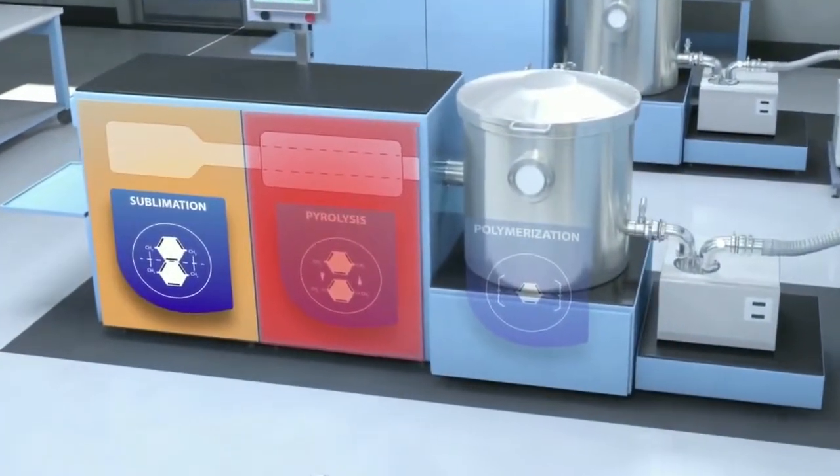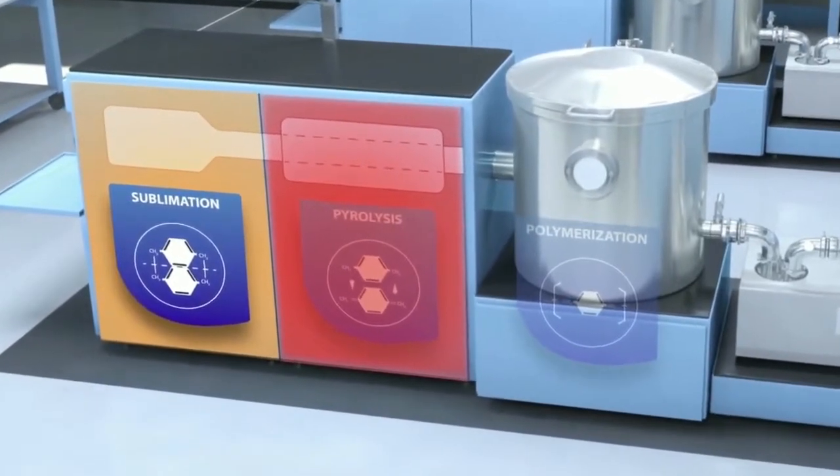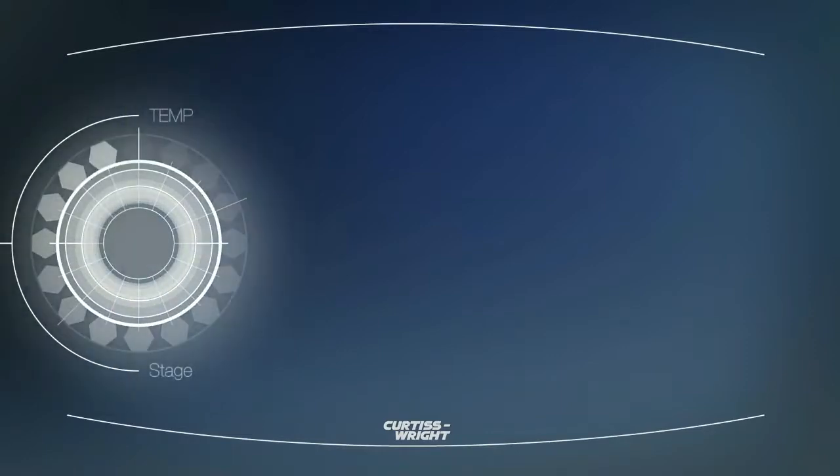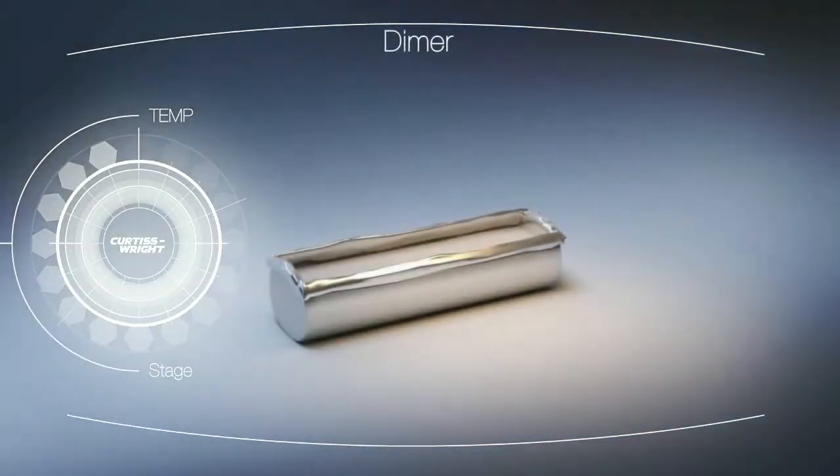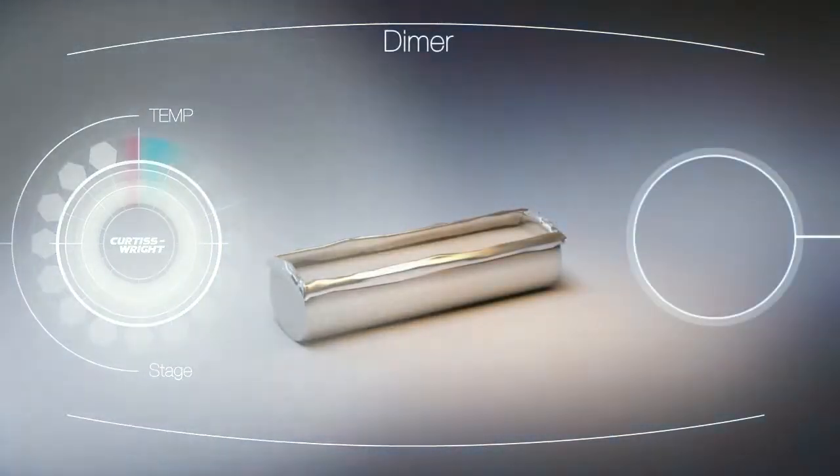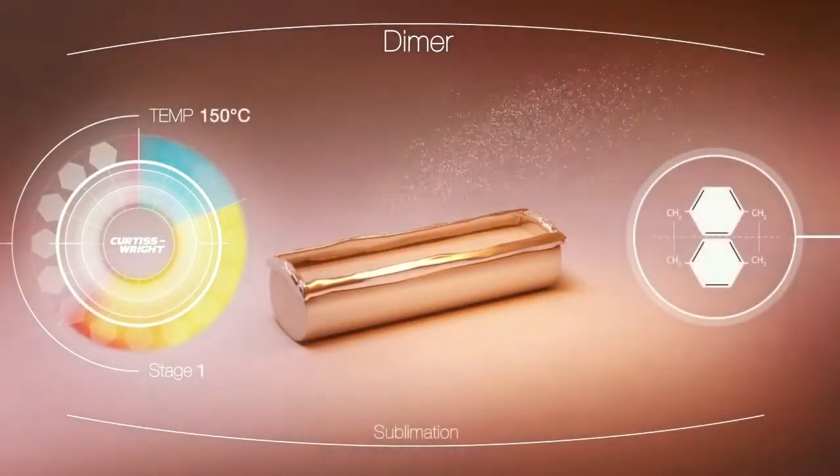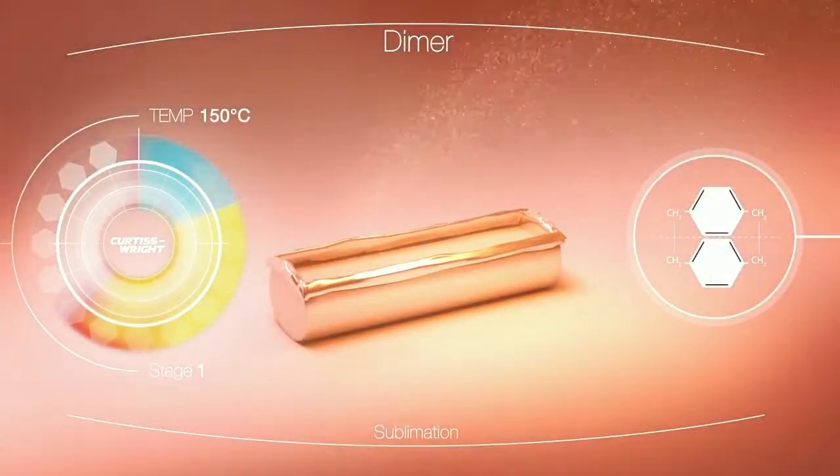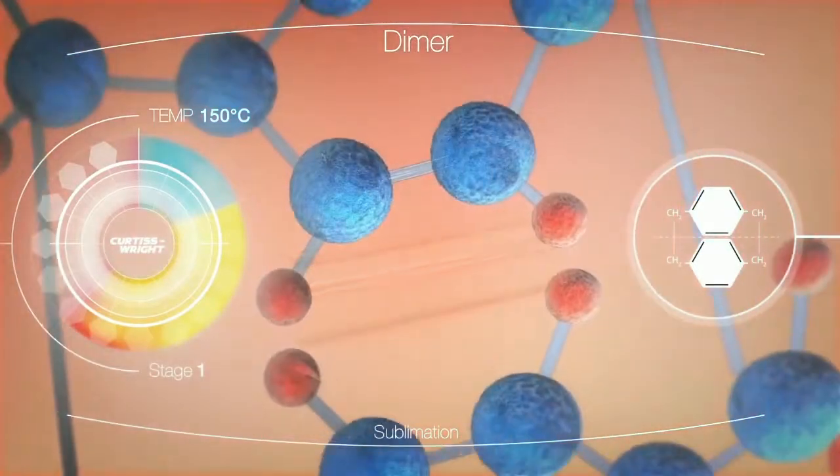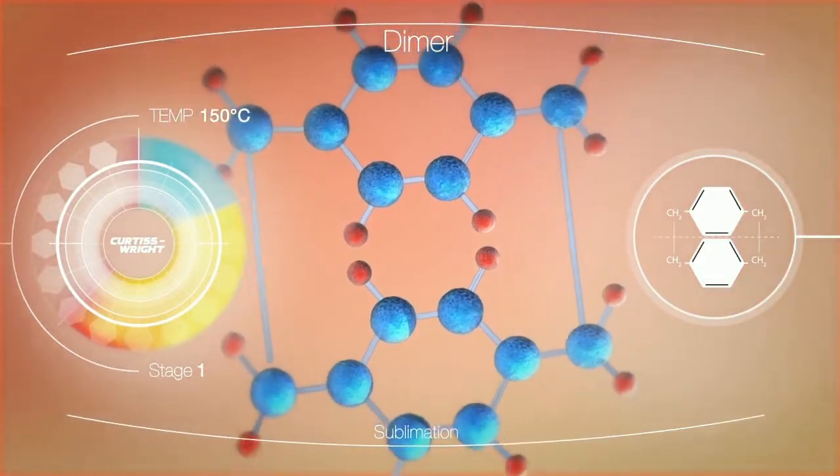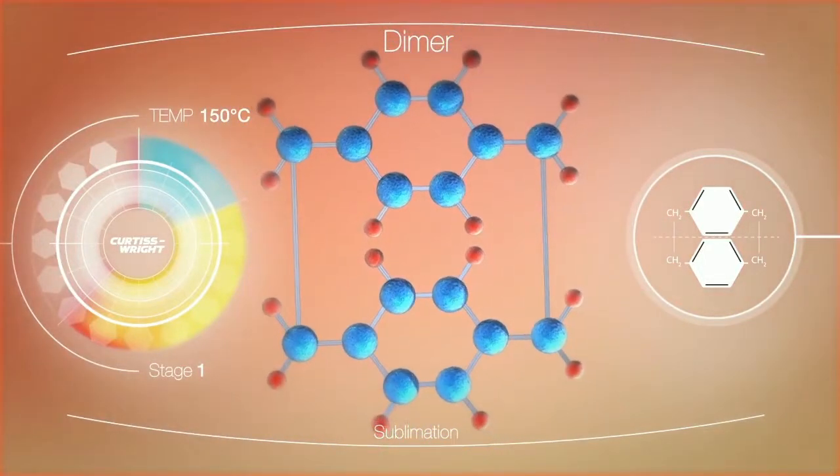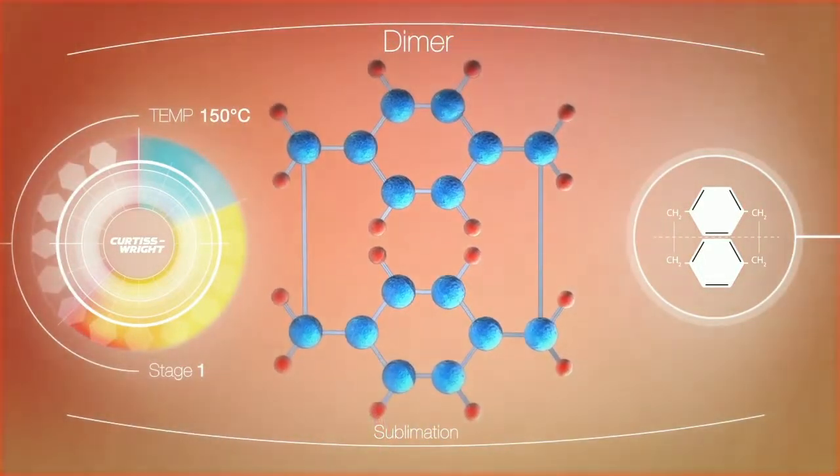The first stage in our coating process is the sublimation of diperexylene, or dimer. The dimer is heated in a partial vacuum to approximately 150 degrees Celsius, resulting in conversion from a solid to a gaseous state. Coating thicknesses and uniformity are both dictated by the amount and purity of the dimer used. Our proprietary dimers are over 99.6% pure.